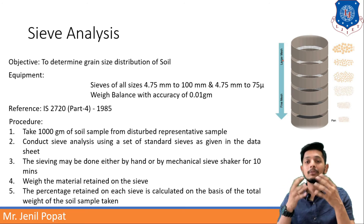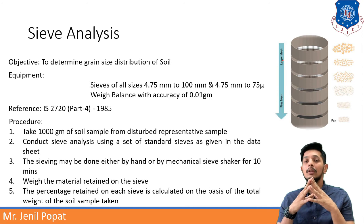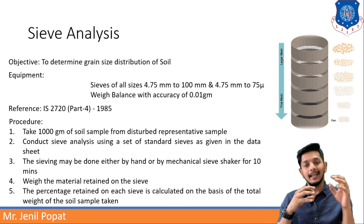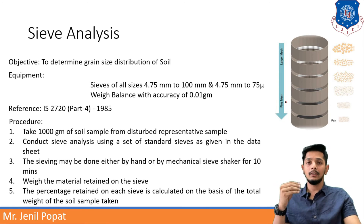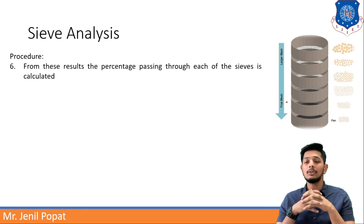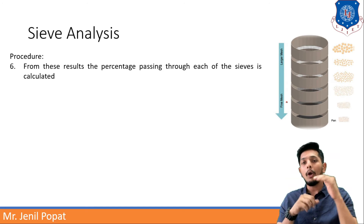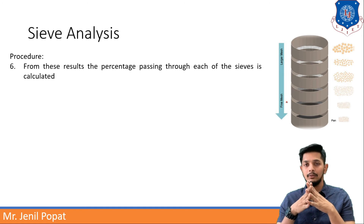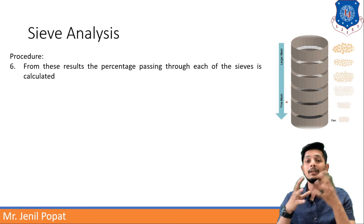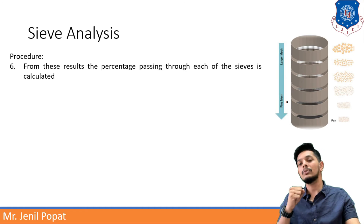You know the total weight of the soil sample was 1000 grams. If 10% of that is retained on the second sieve, then you will get to know 10% of soil is of that size. The next step is from these results, the percentage passing through each of the sieves is calculated. If 1000 grams is on the top of the sieve and in the second sieve 500 grams is there, 50% has passed and 50% is retained on the second IS sieve. You will get to know the sizes and distribution of soil.